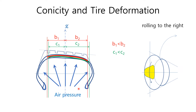The inflated tire shape with air pressure can also explain the conicity. A tire cannot maintain its symmetric shape with respect to the longitudinal center line because the stiffness of the right half is bigger than that of the left half. Therefore, the left half radius is larger than the right one because the left half is more inflated than the right half. Consequently, the tire rolls to the right.